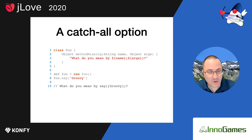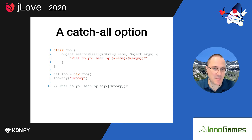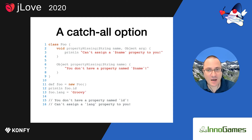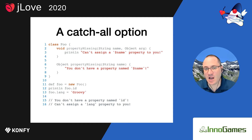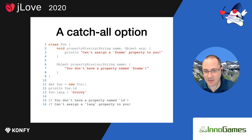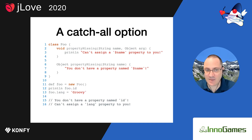If it works for methods, it should work for properties as well, because properties are just a convention for getter and setter methods. It turns out we can do the same thing — there is a 'does not understand' for properties. There is one version for the setter and one version for the getter. When we access a property like 'id' that doesn't exist, we get one printout, and when we try to set a property like 'length' that doesn't exist, we get another.